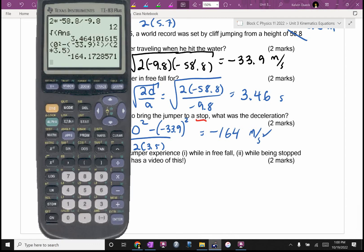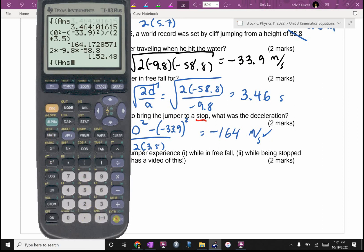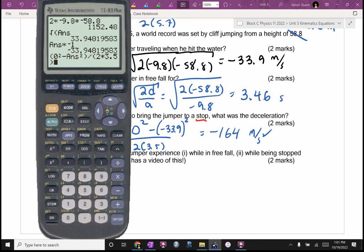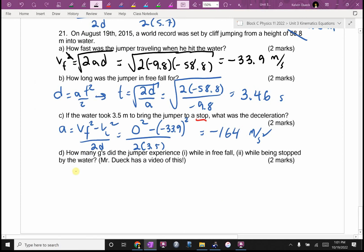A is going to be VF squared minus VI squared all over 2D, where VF is 0 squared and D is 3.5. But I've got a problem. I don't know VI. Or do I? VI at the bottom of the free fall, that's VI right when we hit the water. It's going to be bracket 0 squared minus bracket negative 33.9 squared divided by 2 times 3.5. And I get an acceleration of negative 164.2 meters per second squared.